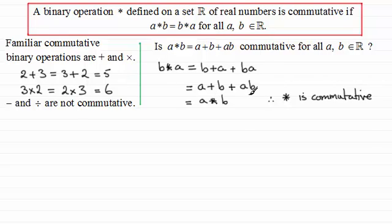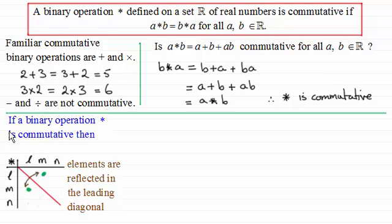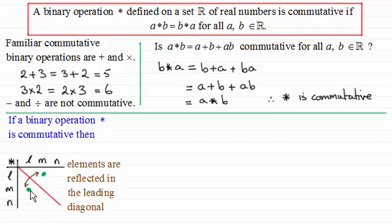Now there are situations where you're given tables. If a binary operation defined by star is commutative, what you would notice in the table is that the elements are a reflection of one another in the leading diagonal. For instance, where I've got this green dot — l combined with m — that would give exactly the same result as m combined with l.